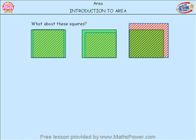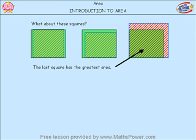Look at the middle square — there's a bit more cellophane overhanging that square, isn't there? So that square's area must be smaller. Look at the last square, on our right. The piece of cellophane isn't big enough to cover it. There is still some of the square sticking out underneath. So that means the biggest square — the one with the most area — is this third square, the one on our right. So the last square has the greatest area.